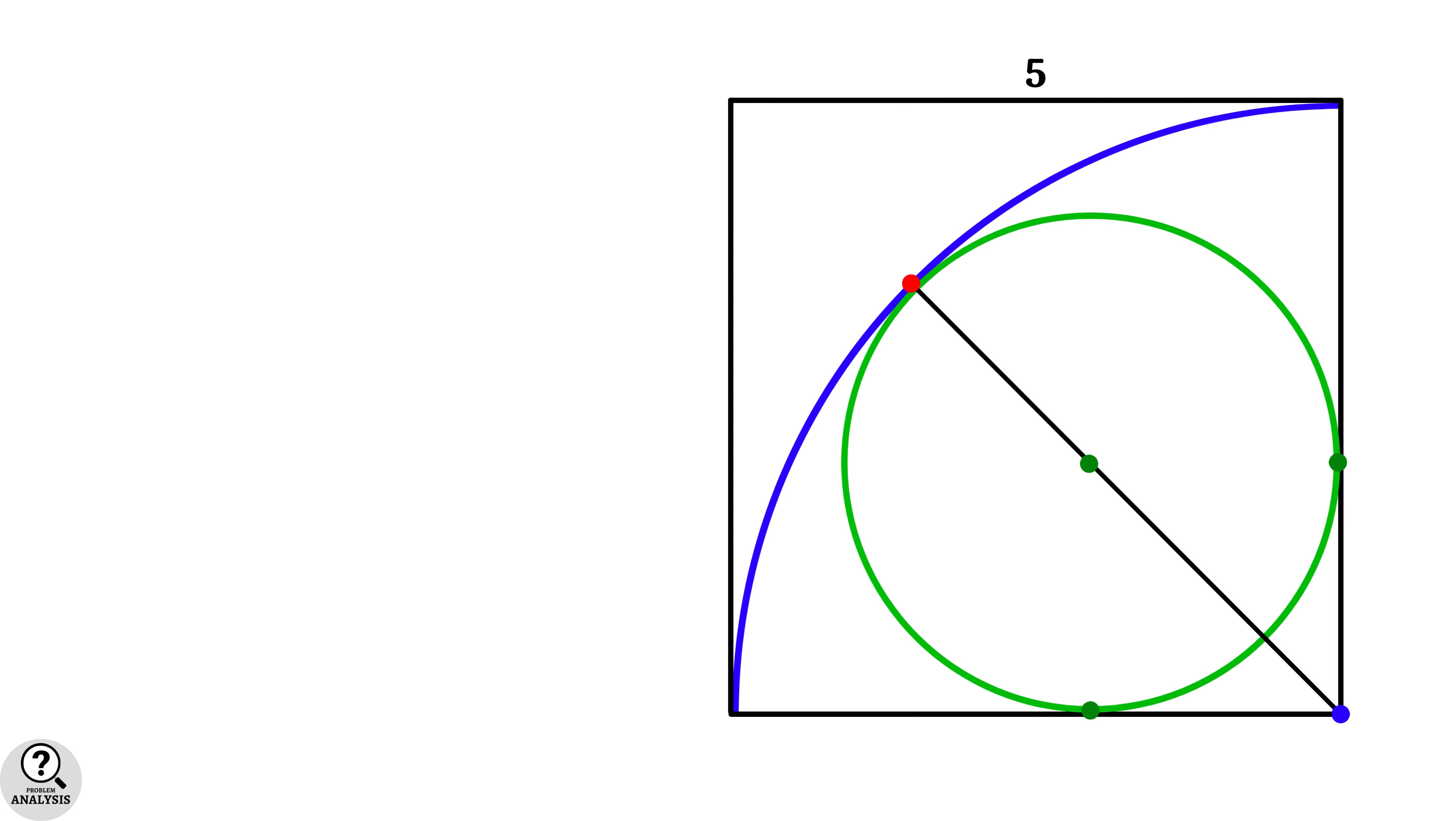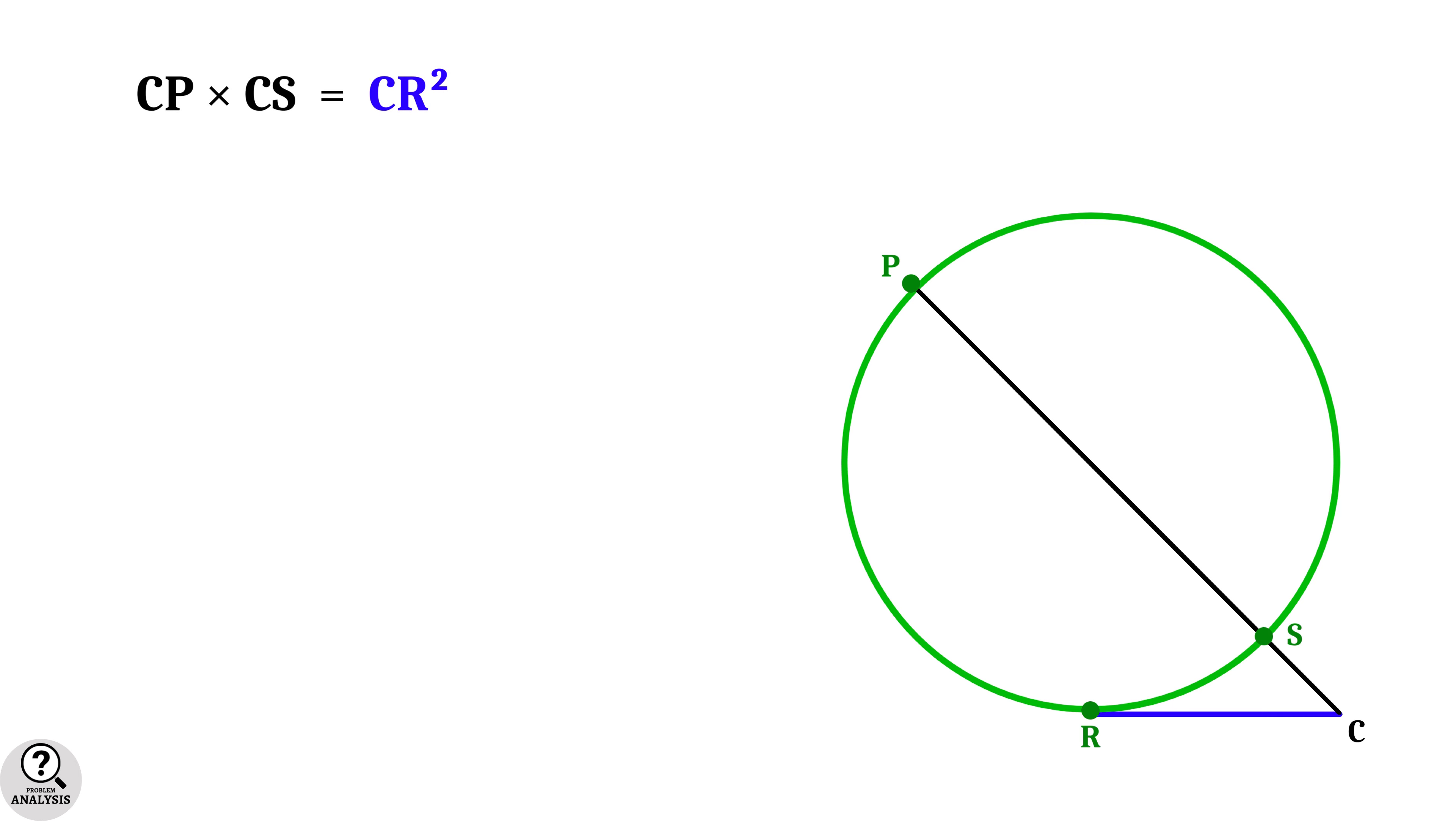Now observe the figure carefully. We can see a diagram which is similar to the diagram we have seen in property 2. Keeping some notations and comparing with the property 2, we can see that the product CP into CS is equal to the square of the tangent CR.